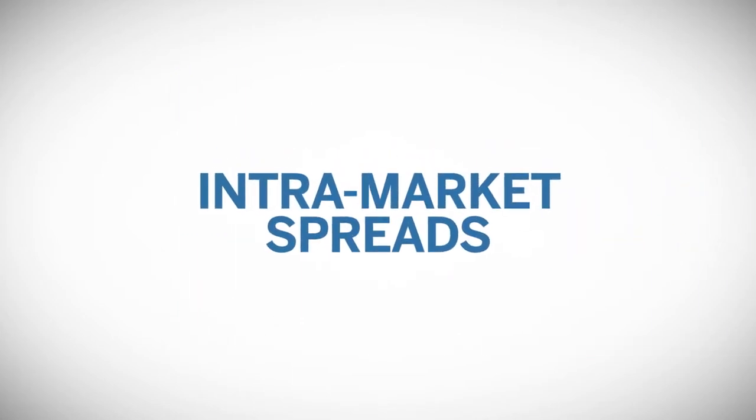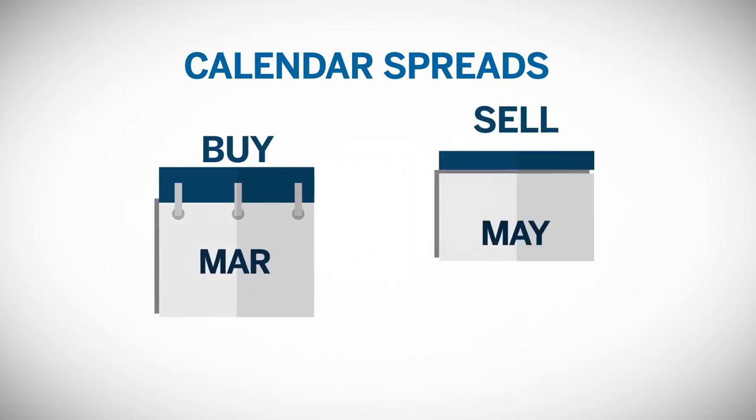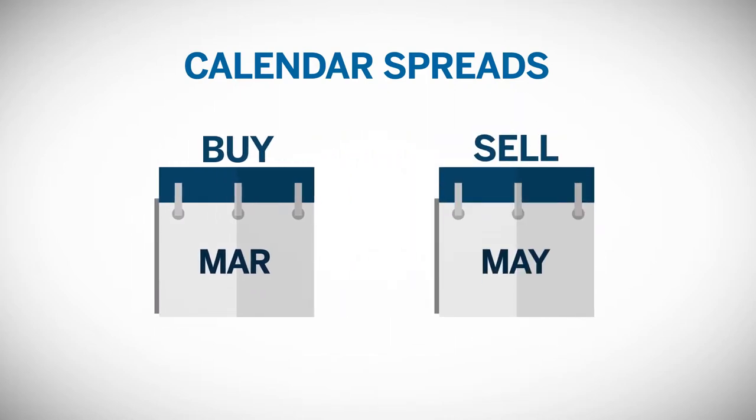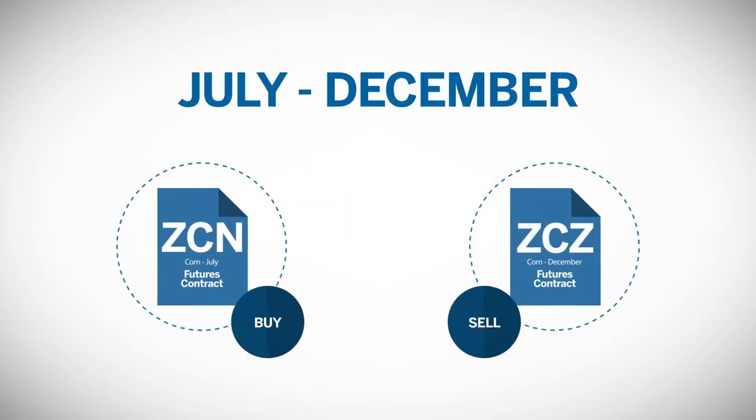Intramarket spreads, also referred to as calendar spreads, involve buying a futures contract in one month while simultaneously selling one in a different month for the same grain or oilseed commodity. One example would be the July-December corn spread.